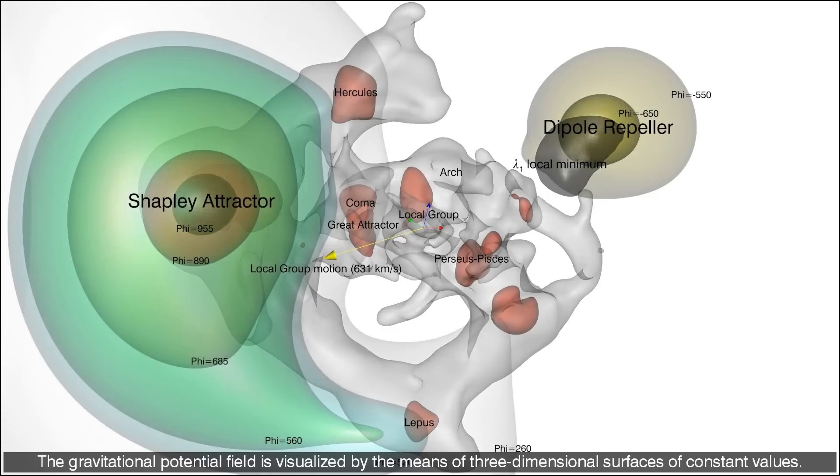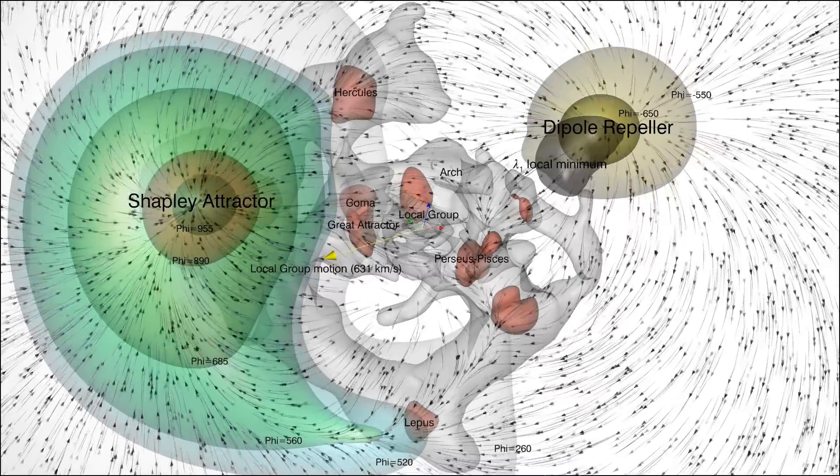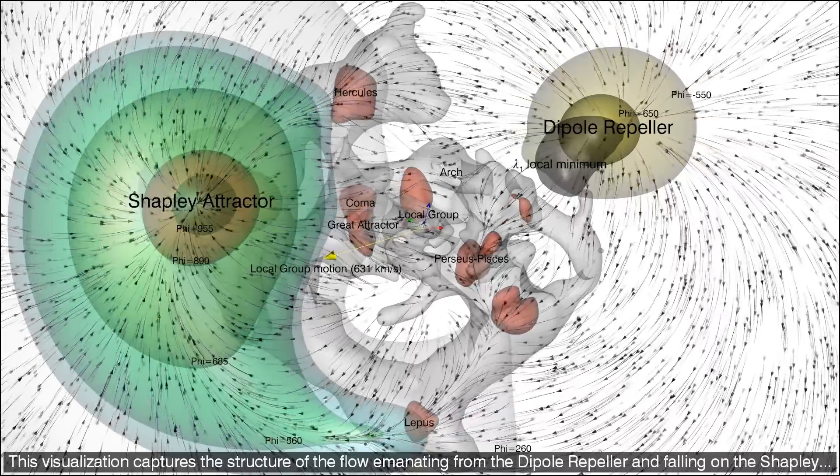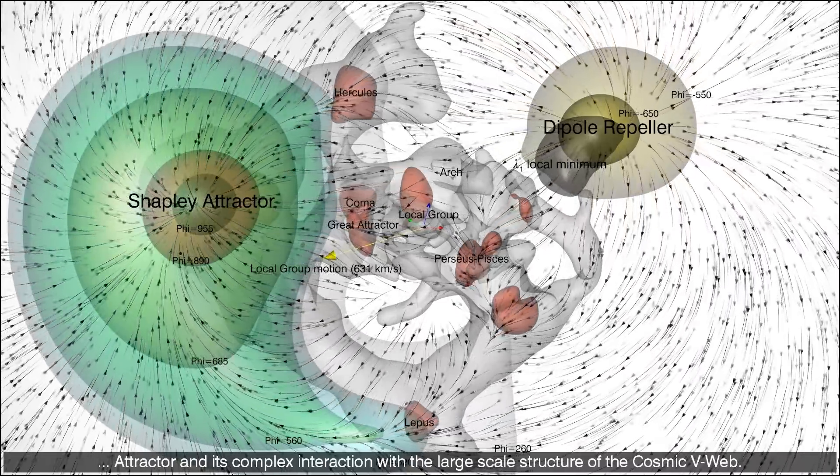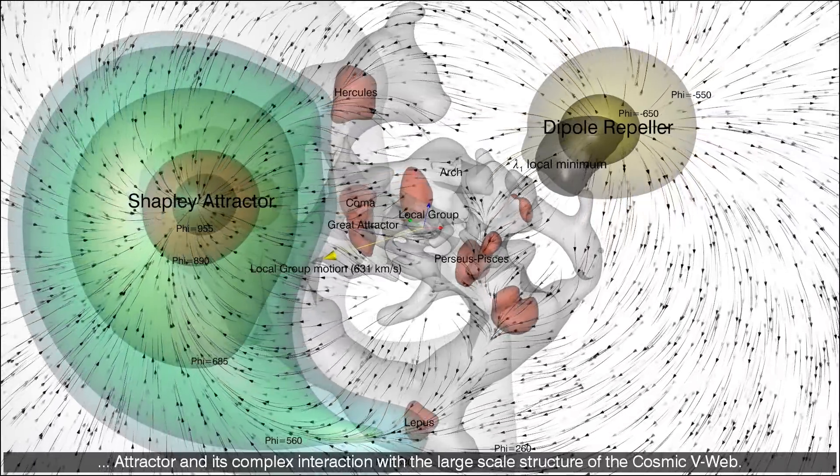The gravitational potential field is visualized by means of three dimensional surfaces of constant values. The surfaces of lowest potential materialize the dipole repeller. Surfaces of highest potential materialize the Shapley attractor. This visualization captures the structure of the flow emanating from the dipole repeller and falling on the Shapley attractor, and its complex interaction with the large-scale structure of the cosmic web.